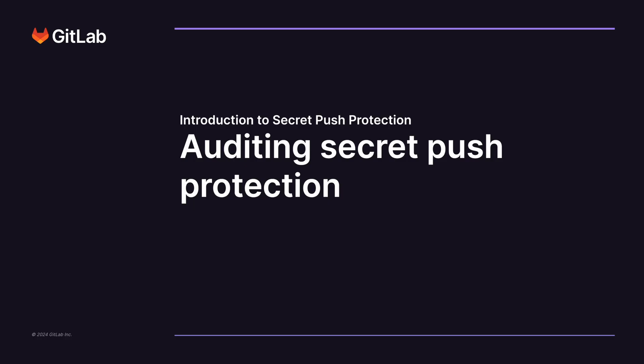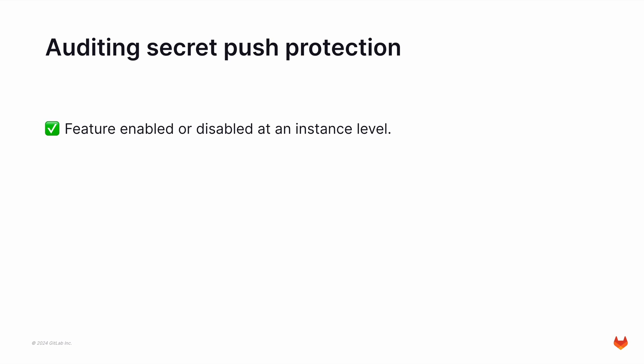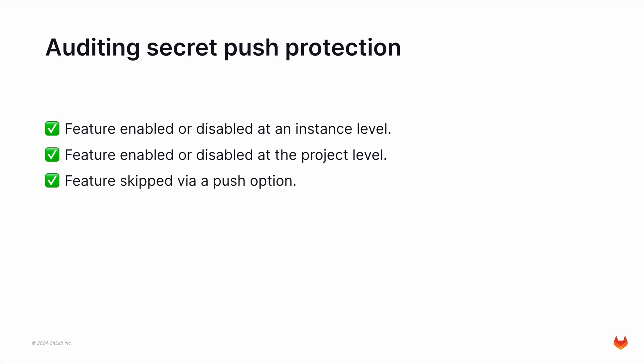If you are an administrator or someone in the security or compliance team in your company, you may wonder how to audit Secret Push Protection. Secret Push Protection records an audit event for each time the feature is enabled or disabled at the instance level. This is also the same for when the feature is enabled or disabled at the project level. Additionally, an audit event is created when the feature is skipped, whether via a push option or via a commit message.